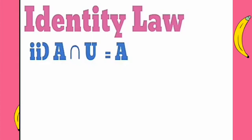The second identity law is A intersection U is equal to A, where U is the universal set.